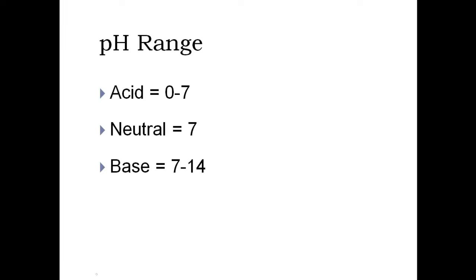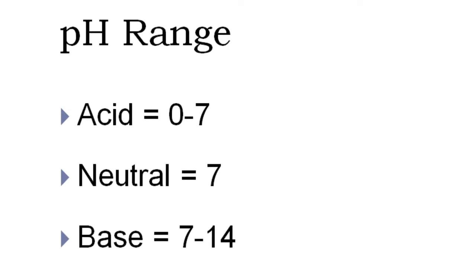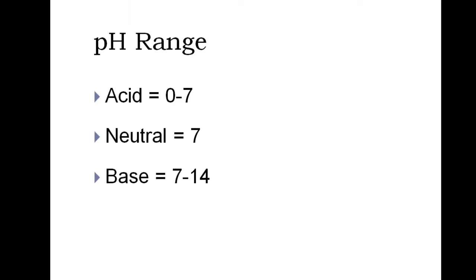Acids generally range in pH from 0 to 7. A neutral solution will have a pH around 7, and a base solution from 7 up to 14. So these are the ranges of what's considered an acid, a base, or a neutral solution.